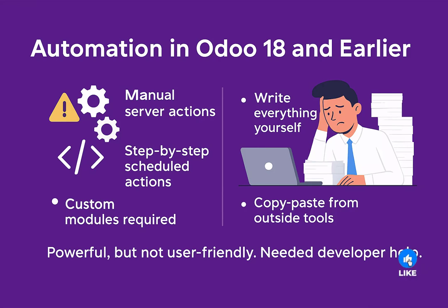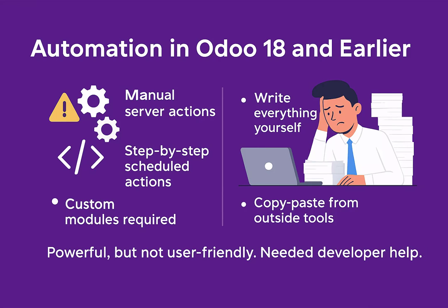In Odoo 18 and earlier, if you wanted automation, you had to write server actions manually, configure scheduled actions or automation step by step, or rely on custom modules and extra coding. And for generating text like product descriptions, emails or notes, you had to type everything yourself or copy paste from outside tools. In short, automation was powerful but not very user friendly. Business users often needed help from developers just to set up simple workflows.